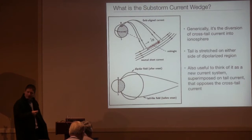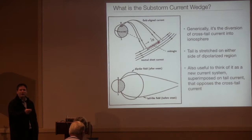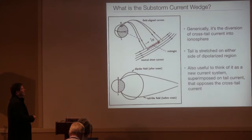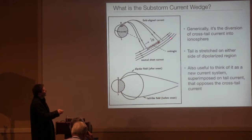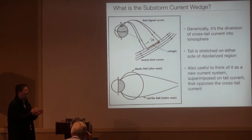And so what is the substorm current wedge? The fact that we have dipolarization at Mercury implies that there must be some sort of currents at the edges of the dipolarized region, at least in the quasi-static sense. So the substorm current wedge is generically the diversion of crosstail current into the ionosphere. As I mentioned earlier, it's because there's a dipolarized region here or disruption of the crosstail current, and that current then flows into the ionosphere. And that's the original description. Important to point out that on either side of this dipolarized region, the tail remains stretched. So it's a localized, azimuthally limited region of dipolarized field. And that's what gives rise to these field line currents.